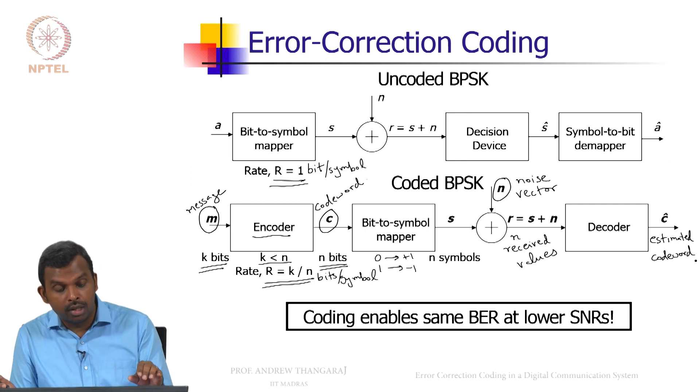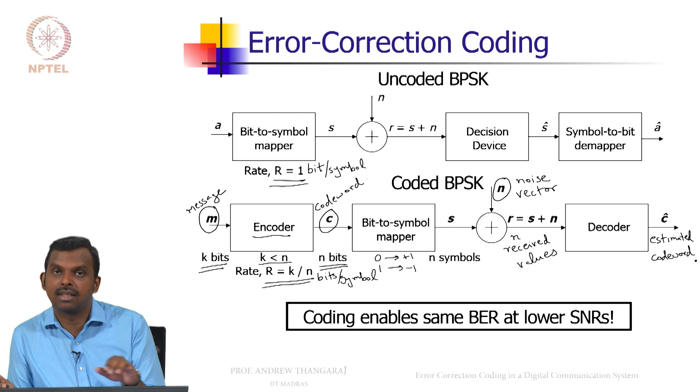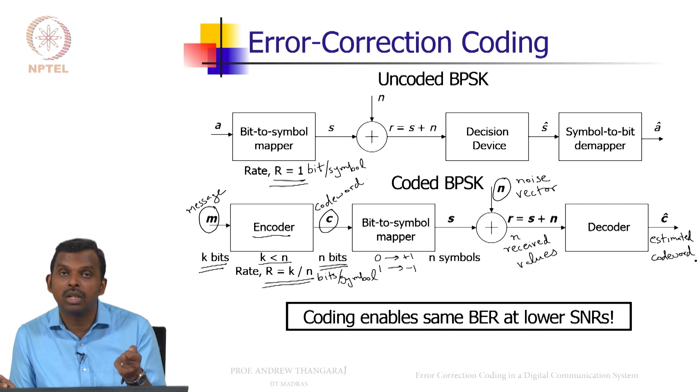You have a certain BER versus SNR trade-off. BER is Q of square root of SNR. If you do coding, you can get the same BER at a lower signal to noise ratio. Now why would you want that? Because in your system, the signal power costs you something. If you think of a mobile phone, the signal you are transmitting costs you energy and that energy comes from your battery.